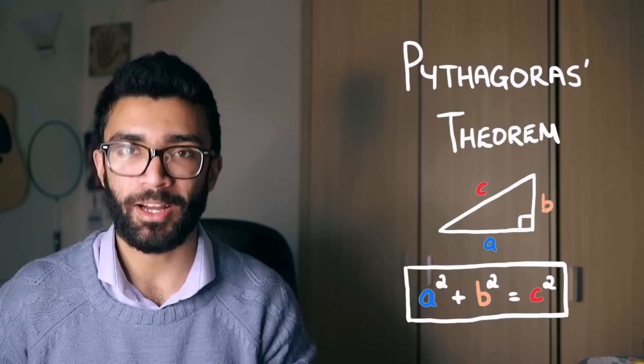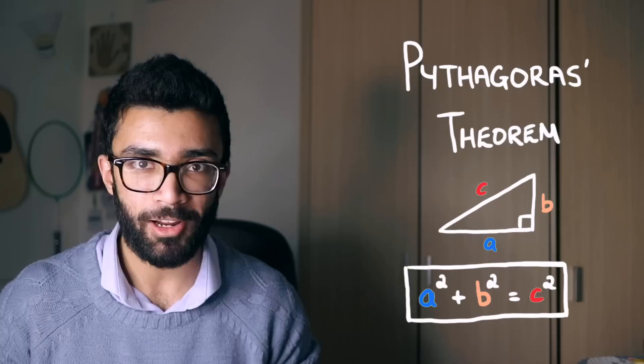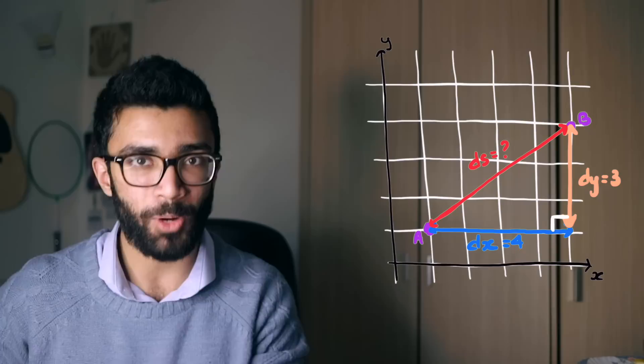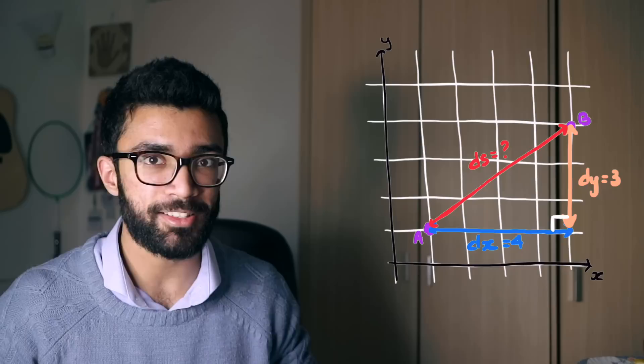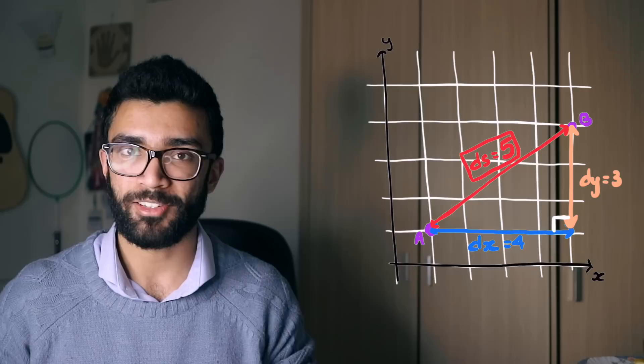Let's start with something that we might think has absolutely nothing to do with this equation — let's start with Pythagoras' theorem. Pythagoras' theorem is a really useful theorem that we can use to work out the length of the longest side of a right-angled triangle when given the length of the two shorter sides. This becomes especially useful when we're trying to find the distance between two random points on a coordinate grid. We need to move four units in the x direction and three units in the y direction, creating a right-angled triangle where the distance we're trying to find is the hypotenuse — five units.